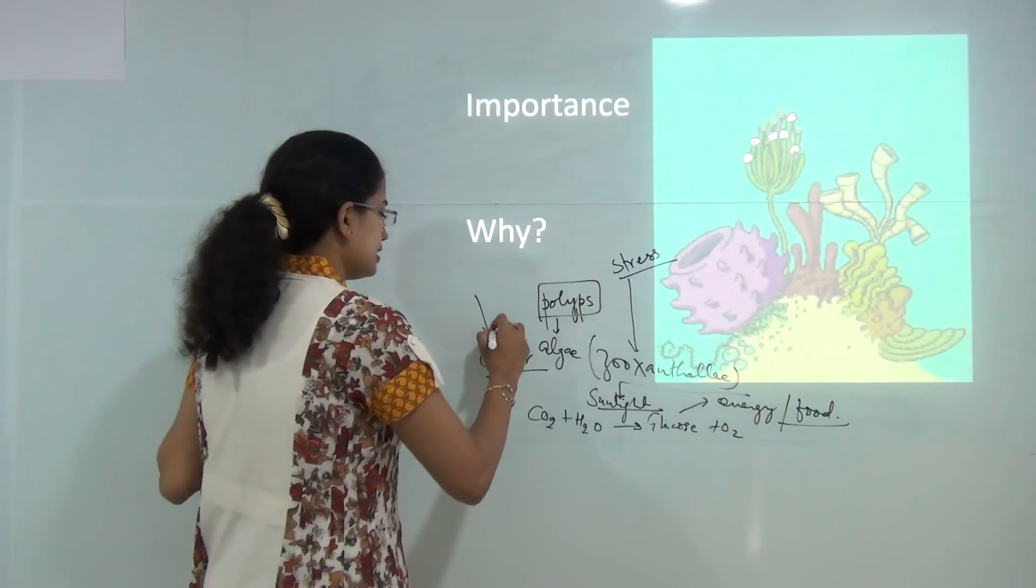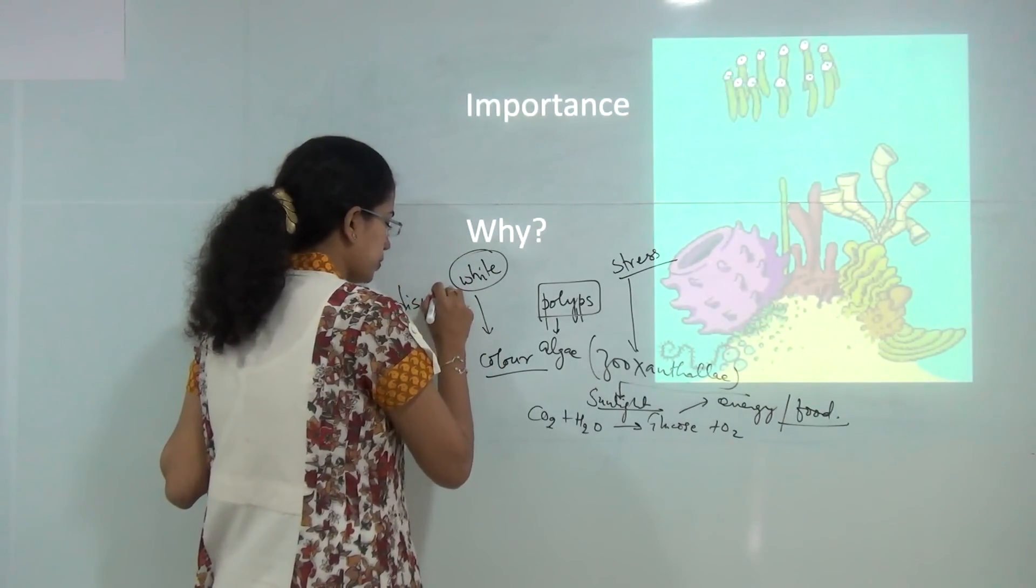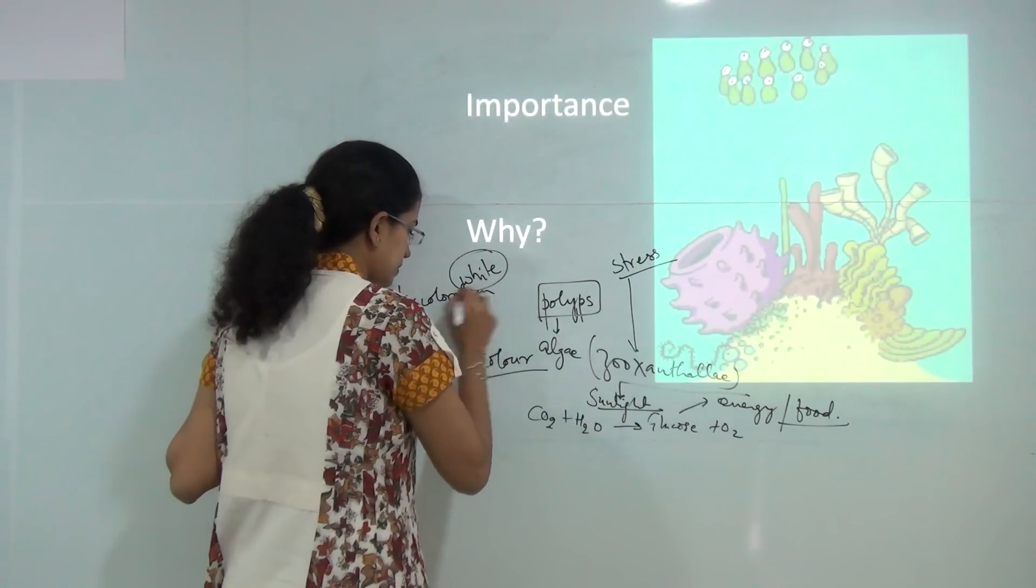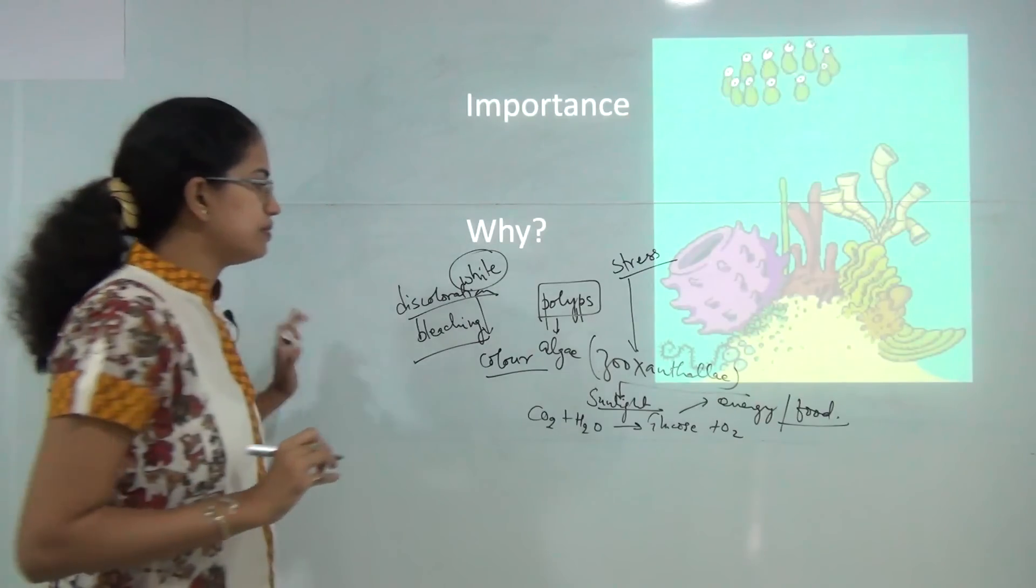As a result, the coral would turn white or discoloration of the corals would occur and this is also known as bleaching. This is also known as coral bleaching.